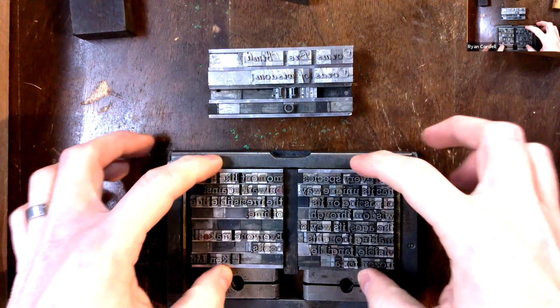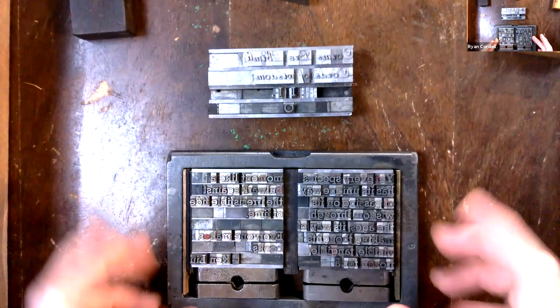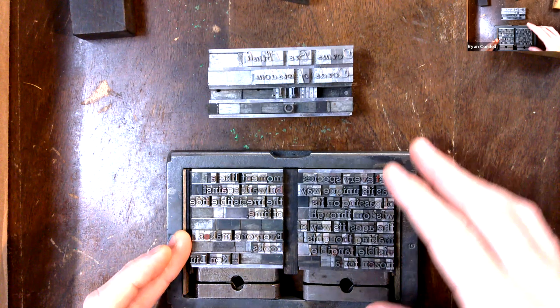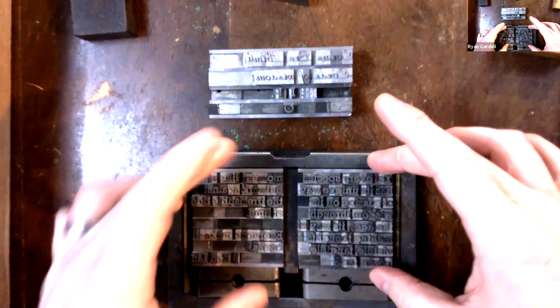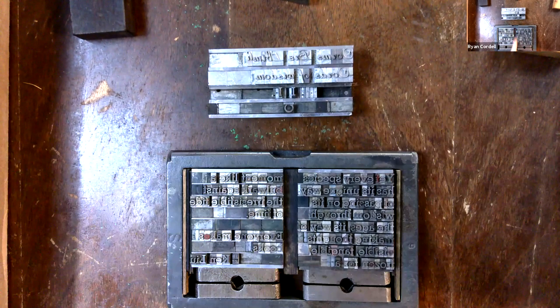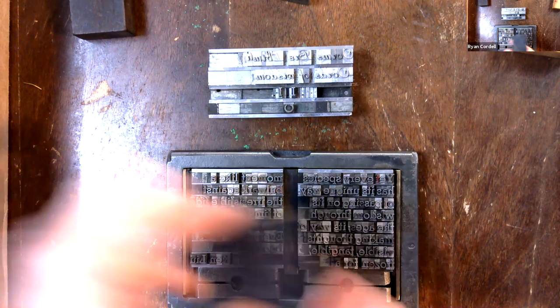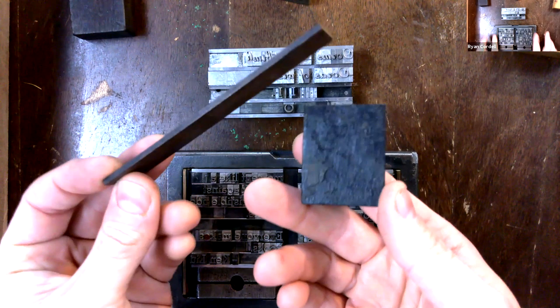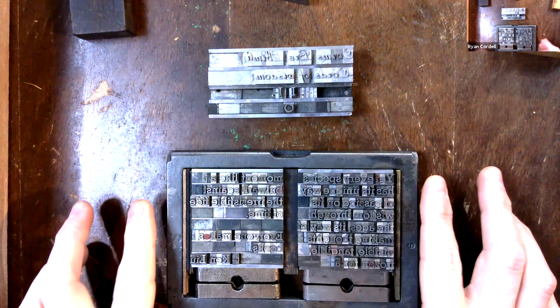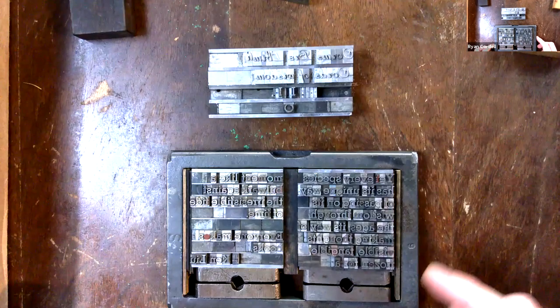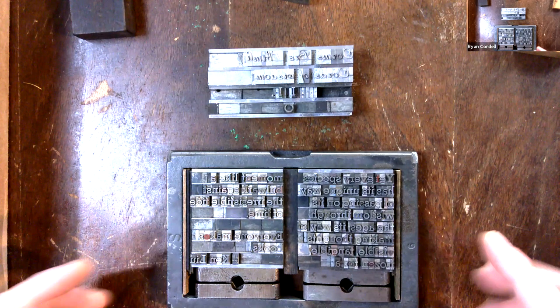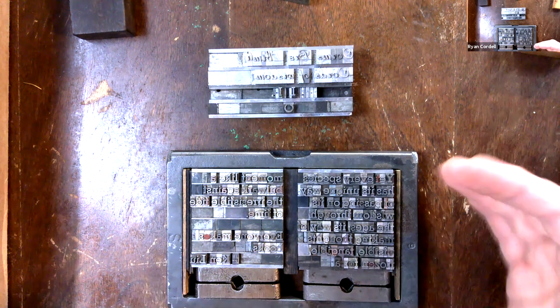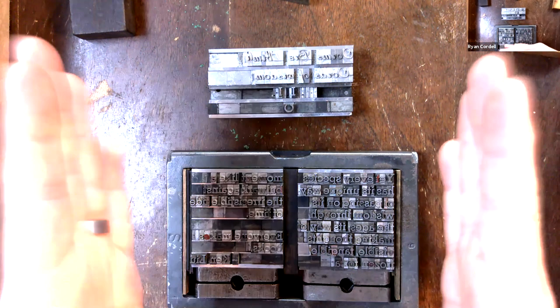This is a very teeny tiny chase for this little teeny tiny press that I have here and we put the text blocks in. You can see the lead and the text here. There's two columns in this text that I've set, right? We have to think in mirror image. So if you want something in two columns, the ultimate left hand column needs to be over here in the right and the right hand column over here on the left. And then we use this wooden material, which I have a whole box of over here, which is called furniture. And we use the furniture to build out to the edges of the chase.